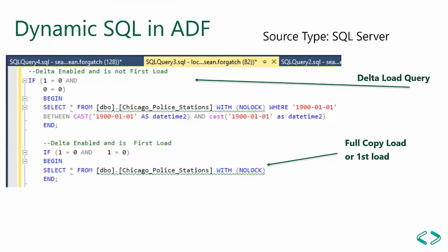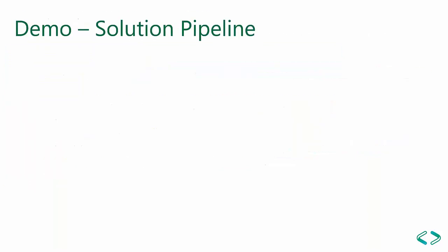Originally I was creating query patterns within the source query and feeding metadata into those patterns, but I found it much easier now to just store the SELECT statements in my options table and pass those in instead.